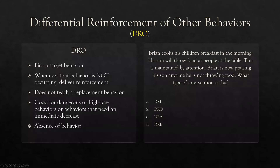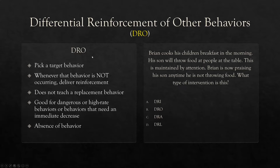Let's get to the types now. First one: DRO — differential reinforcement of other behaviors. DRO is probably more unique than the other five because it's the only one where we are focused on the behavior not occurring at all. From the beginning, we're only delivering reinforcement if the behavior isn't occurring. So we're picking a target behavior — let's call it screaming. Whenever that behavior is not occurring, we're delivering reinforcement.